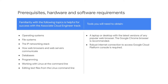Familiarity with the following topics is helpful for success with the Associate Cloud Engineer track: operating systems, file systems, the IP networking stack, how web browsers and web servers communicate, databases, programming, working with Linux at the command line, and editing text files from the Linux command line.